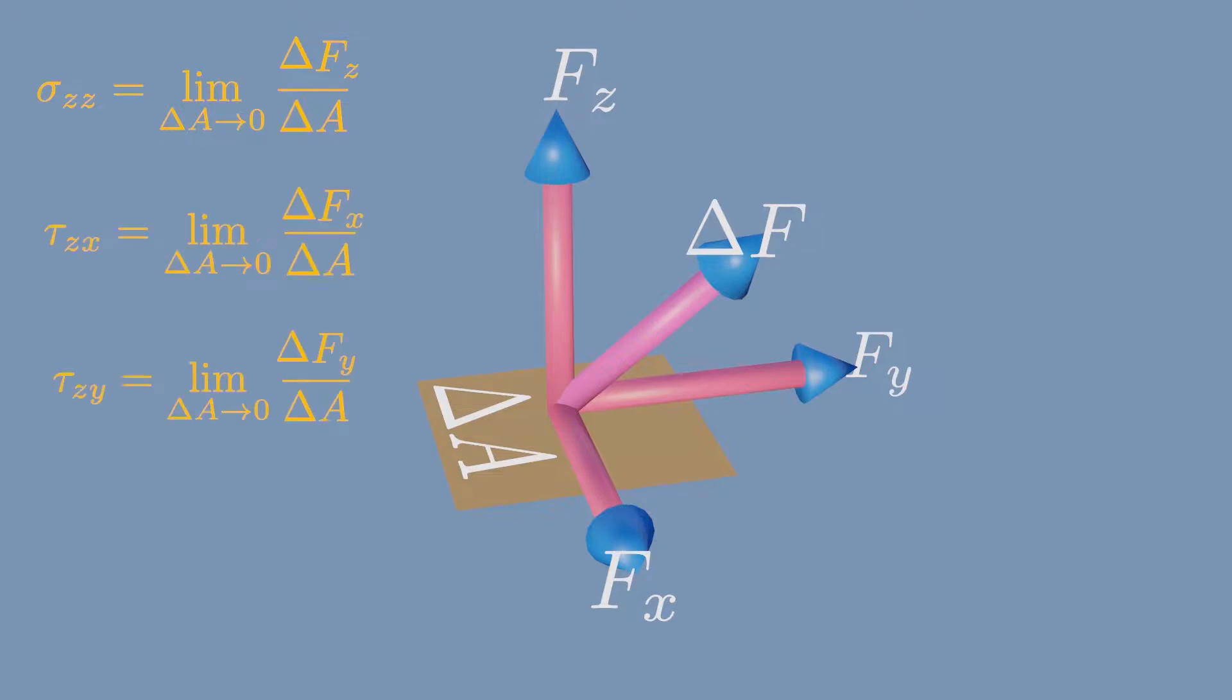Similarly for the shear stresses. The first letter Z in this subscript notation represents the outward normal direction that defines the direction of the area. For example, our area is perpendicular to the Z axis, so we write first letter Z on every stress.